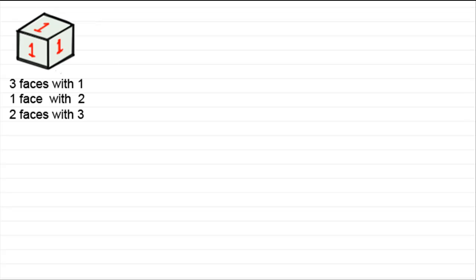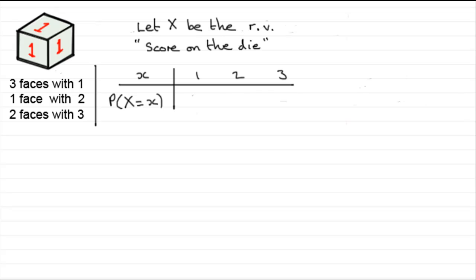Now suppose we were to draw up a probability distribution table, something like this for the random variable X. Let X be the random variable, the score on the die. And that score, illustrated by a small x for the observed value, could be a 1, a 2 or a 3.